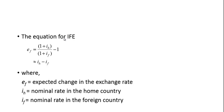The equation for the international Fisher effect is: the expected change in the exchange rate equals one plus the interest rate in the home country divided by one plus the interest rate in the foreign country, or it can be approximated by the interest rate in the home country minus the interest rate in the foreign country. This looks exactly like relative purchasing power parity — we've just substituted nominal interest rates for inflation rates.